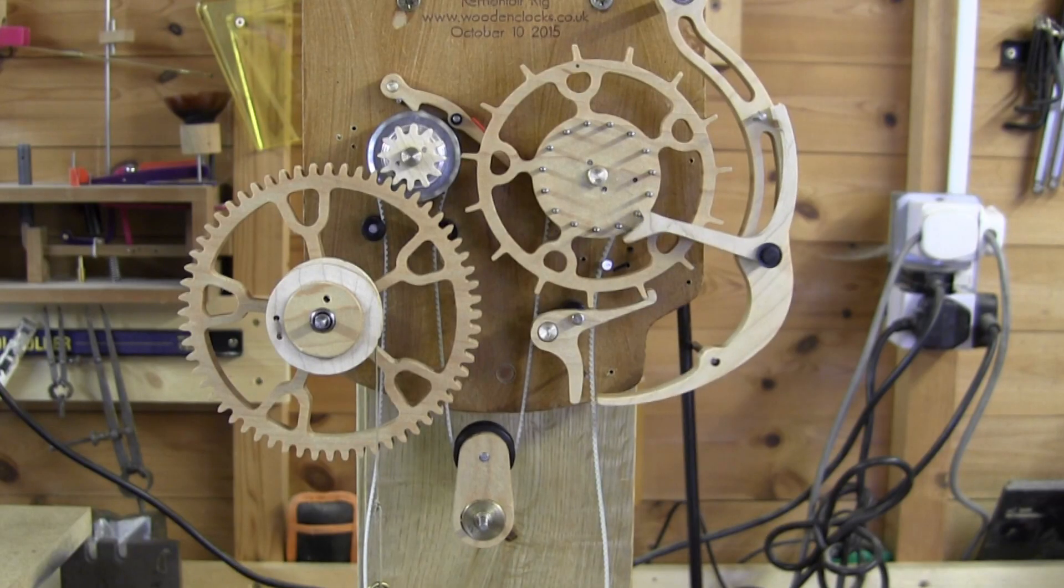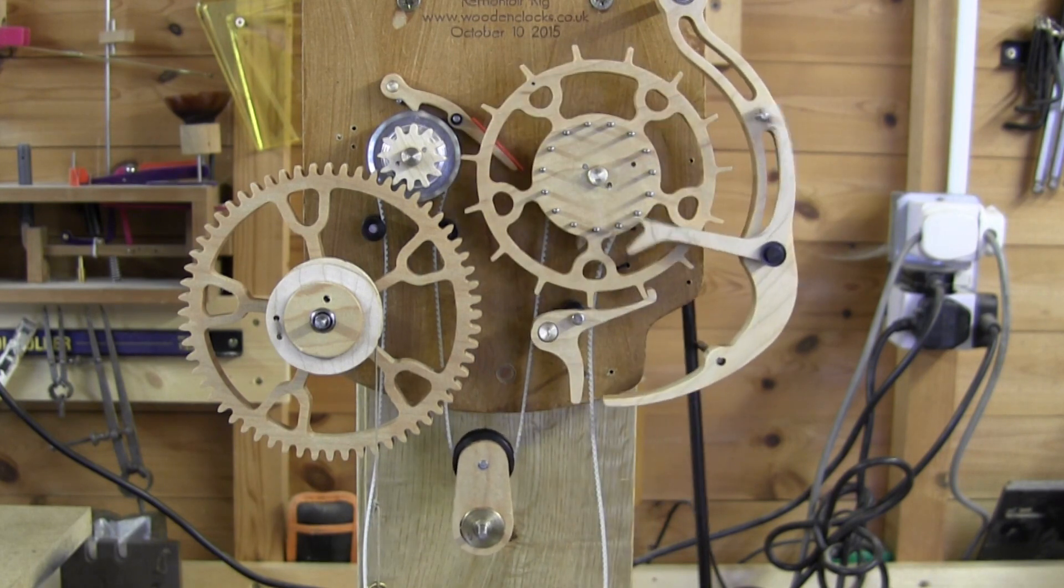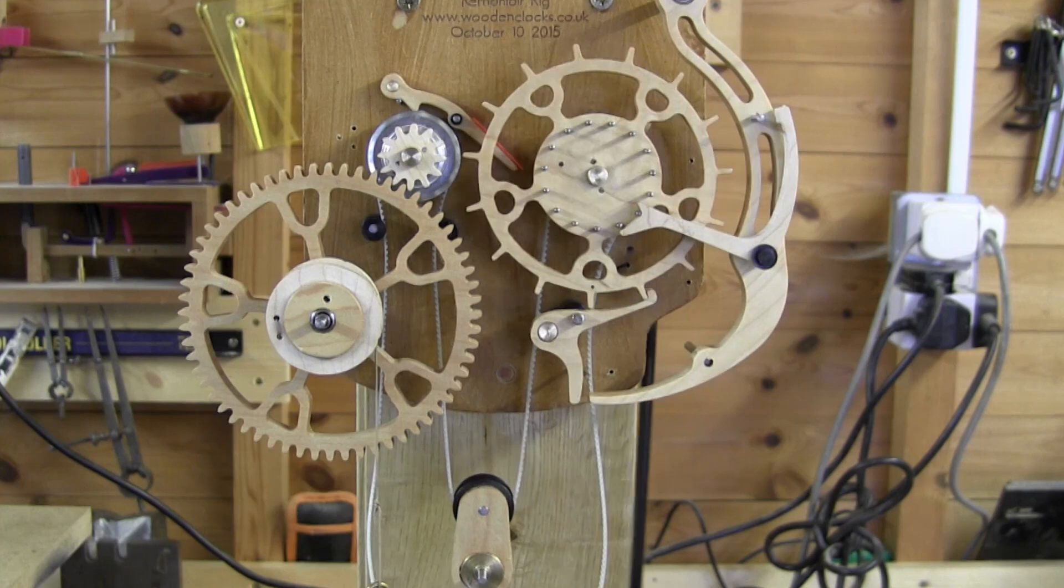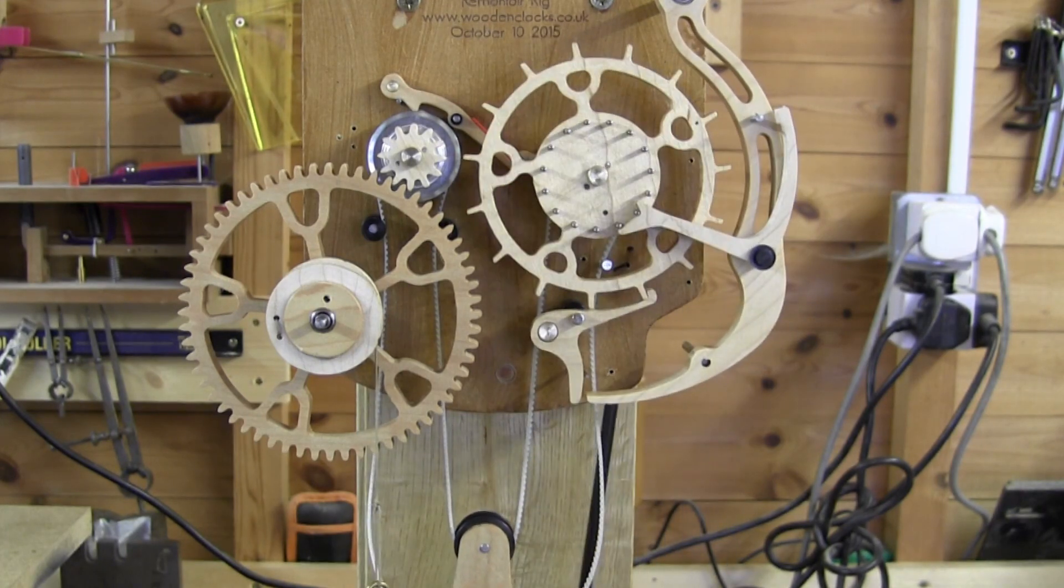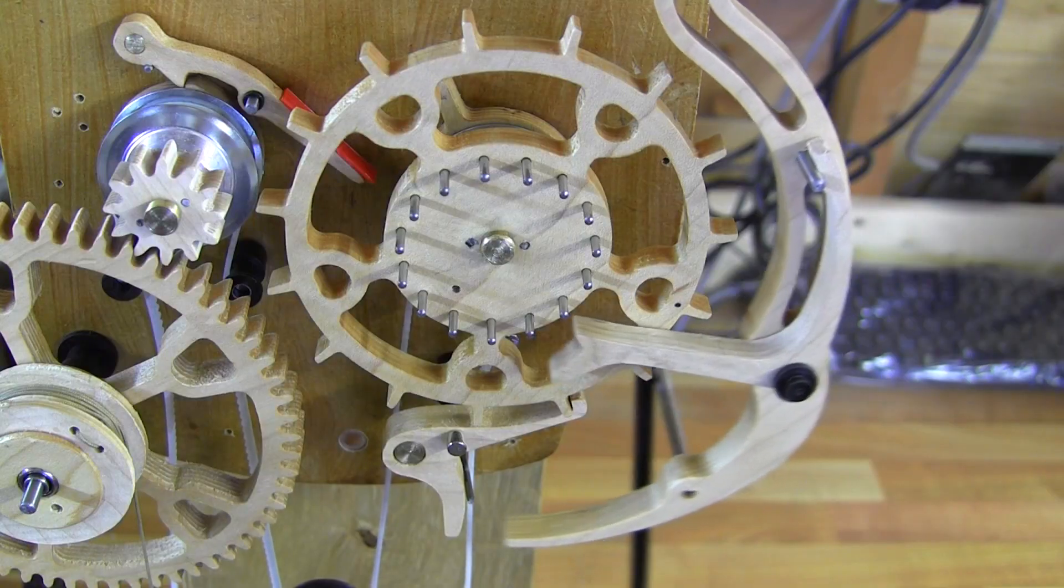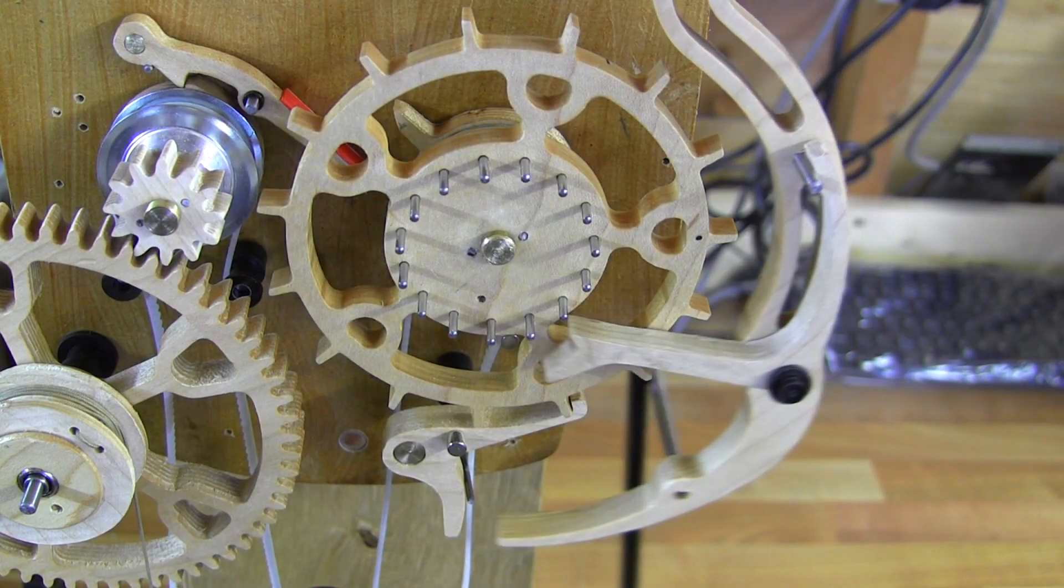The third rig uses a timing belt which works more smoothly than the chain, but would have the same advantages of maintaining accuracy. Unfortunately, the belt proved difficult to use without having a large tension weight to keep the teeth engaged with the pulley.